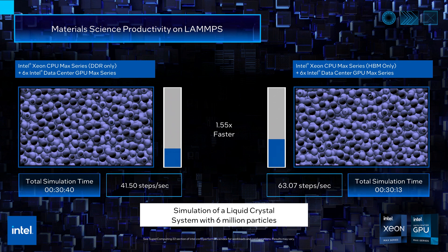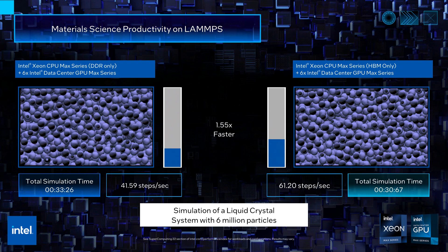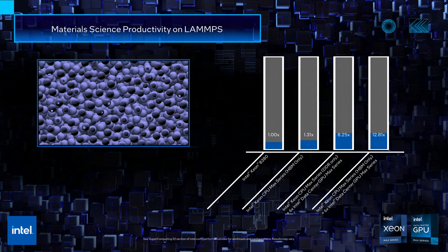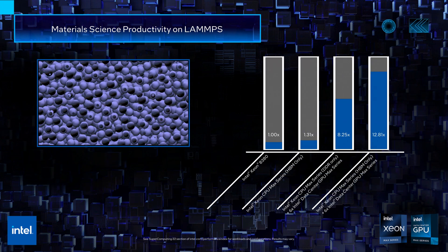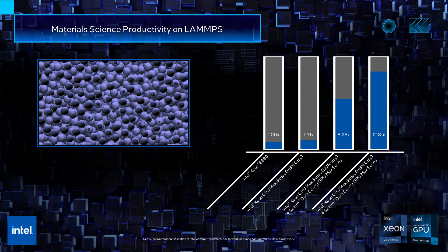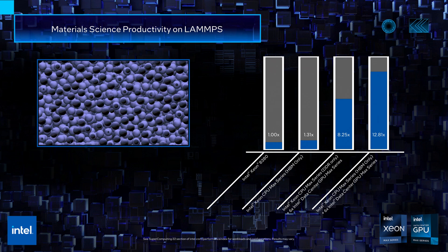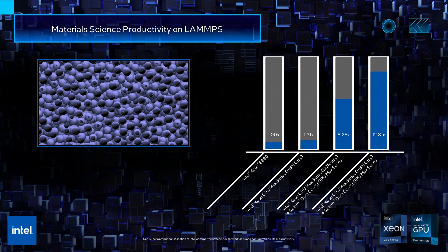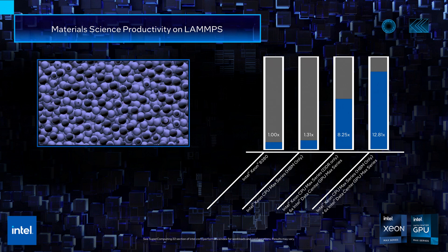This configuration allows for a 1.55x speedup as compared to the case where DDR memory is utilized, and a 12.8x performance improvement against third generation Intel Xeon processors. The advantage of leveraging both architectures together allows customers to maximize performance on workloads which contain both memory bandwidth bound and compute bound portions.